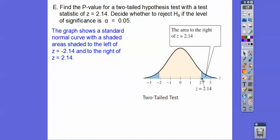Now when we look up 2.14, it's going to give us the whole area to the left. So to get this area, we're going to have to do 1 minus that.